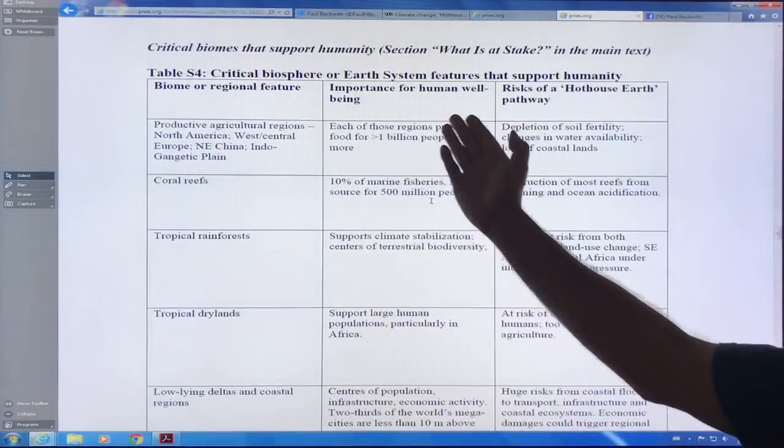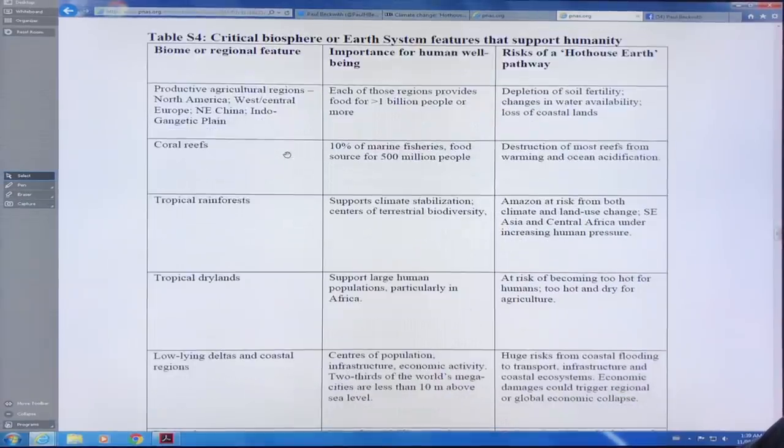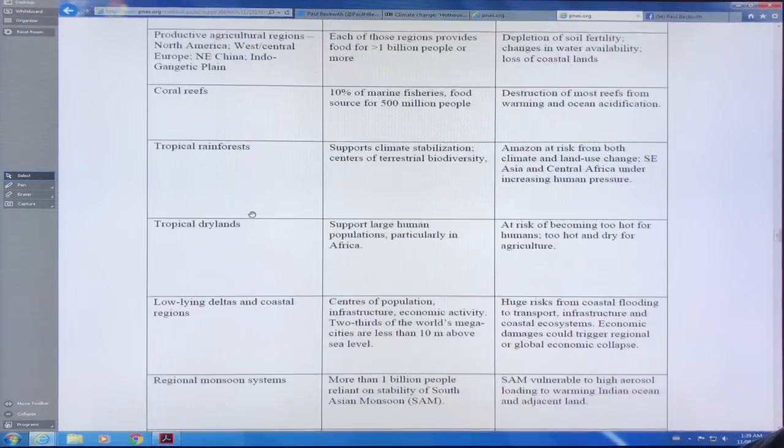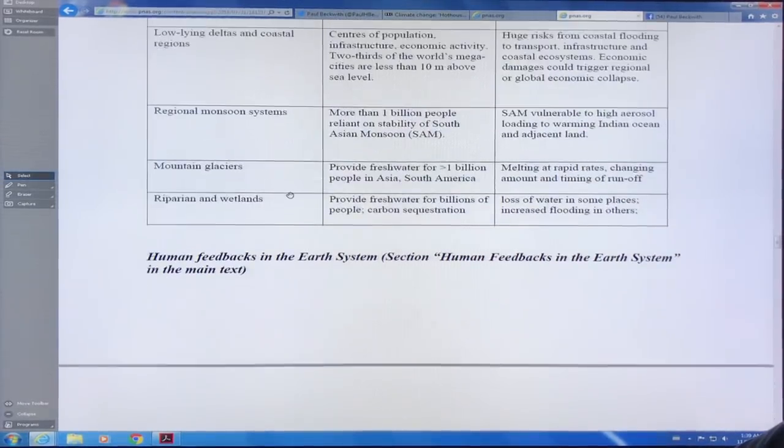These are critical biosphere or Earth system features that support humanity. Agriculture, food is being hit by the droughts right now, by the high temperatures, heat waves and droughts. The productive agricultural regions: North America, West and Central Europe, Northeast China, Indo Gangetic Plain. Each of those regions provides food for about a billion people. When you get soil fertility depleting, less water, loss of coastal lands, it stresses these regions. The coral reefs, 10 percent of marine fisheries or food source for 500 million people. We're losing the reefs. Tropical rainforests, tropical dry land, low lying deltas, centers of population. Two thirds of the world's megacities are less than 10 meters above sea level. Monsoons changing, mountain glaciers, etc.